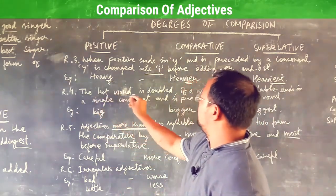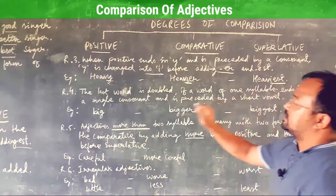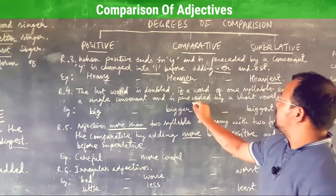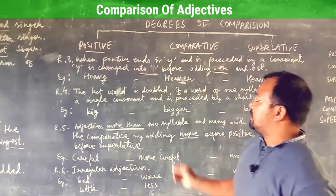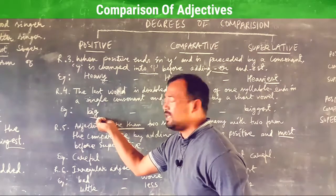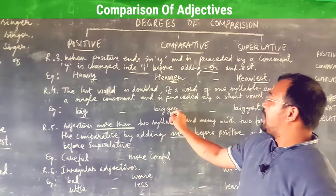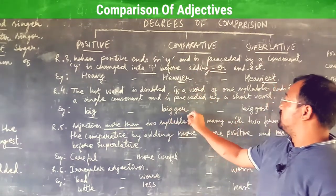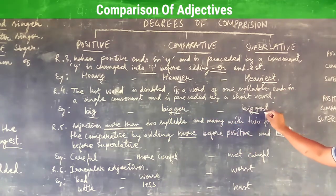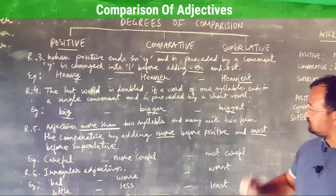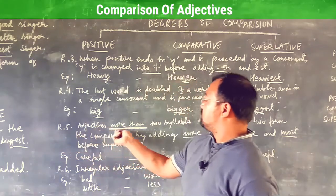Rule number four: the last consonant is doubled if a word of one syllable ends in a single consonant preceded by a short vowel. For example, in 'big', the -g is the last consonant, so it gets doubled and -er is added in the comparative form, giving bigger. The last consonant is doubled again and -est is added for the superlative, giving biggest.